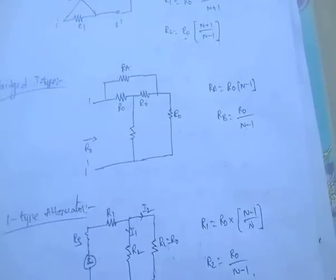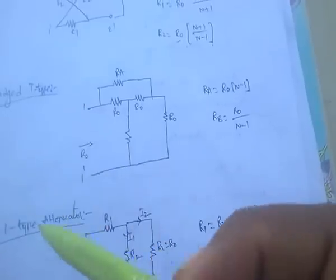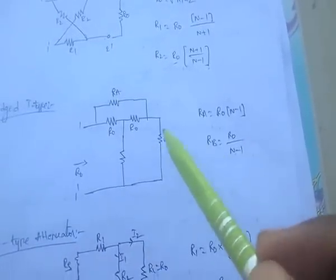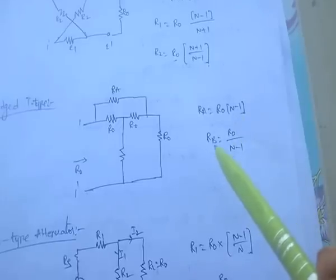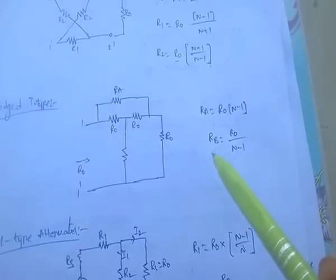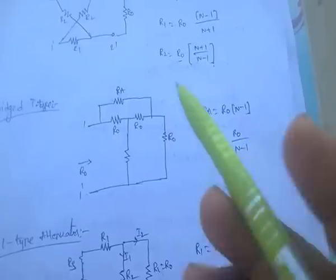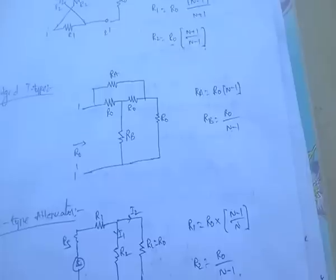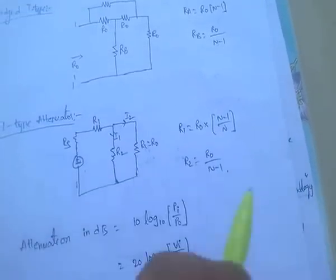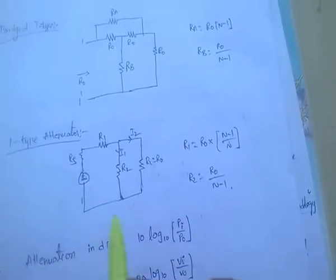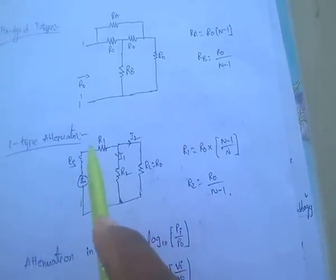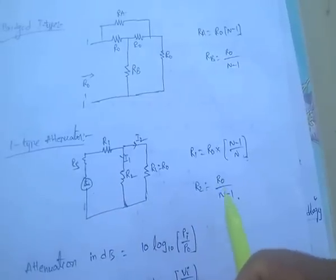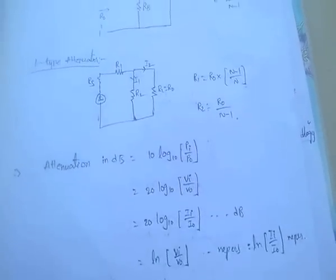For the bridge type attenuator: Ra = R0 × (n−1) and Rb = R0/(n−1). For the L-type attenuator: R1 = R0 × (n−1)/n and shunt element R2 = R0/(n−1). All these formulas are very important.